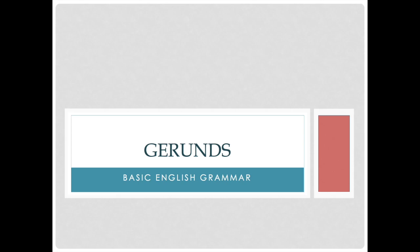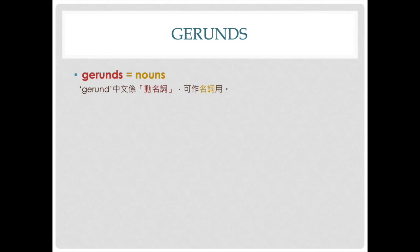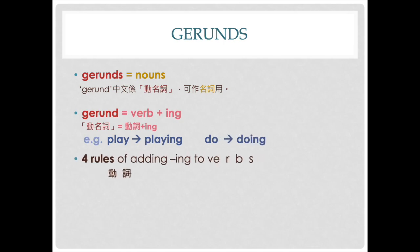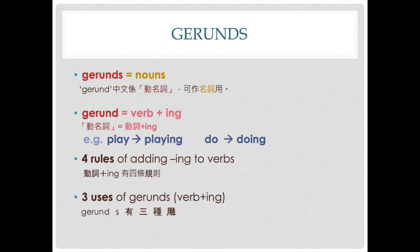Hello! In this video, we're going to talk about gerunds. Gerunds are actually nouns. To form a gerund, we need to add -ing to the verb, to an infinitive verb. Like 'play' — we add -ing to it, it becomes 'playing'. 'Do' — you add -ing to it, it becomes 'doing'. There are four rules of adding -ing to verbs, and there are three uses of gerunds. We will talk about how to use them.